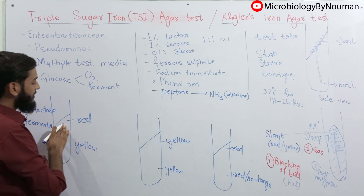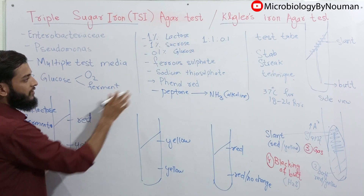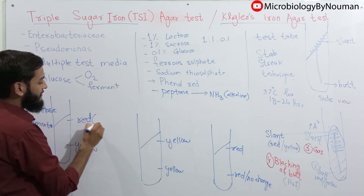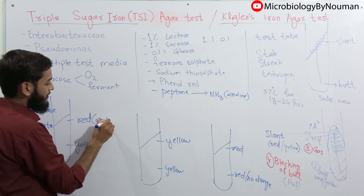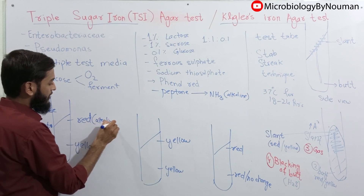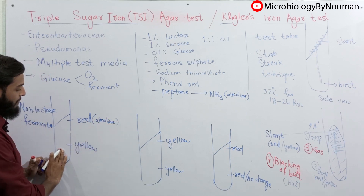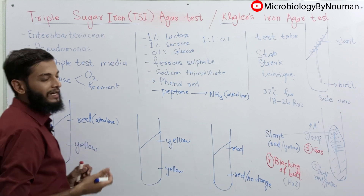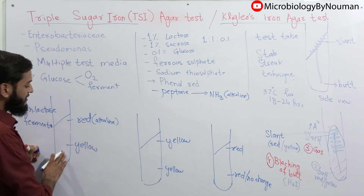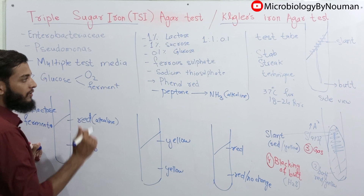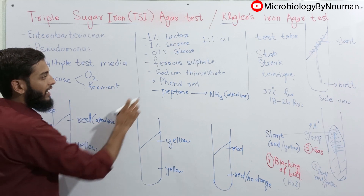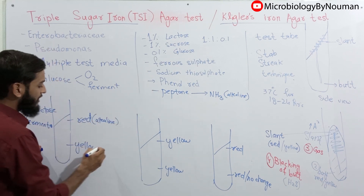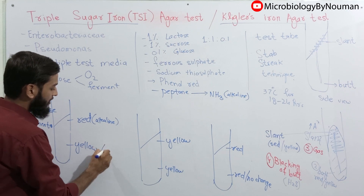So the slant will be alkaline, and the phenol red pH indicator will turn red. Whereas in the butt part — the bottom part — glucose is fermented, and due to fermentation the pH will go down and phenol red will convert to yellow color. So the butt will be acidic.